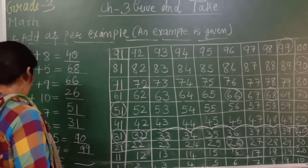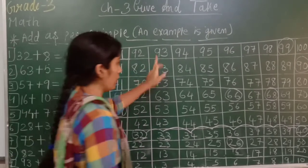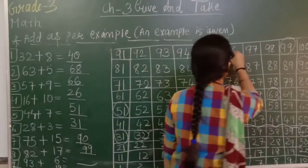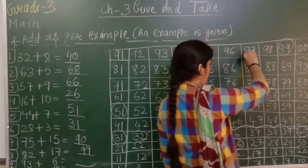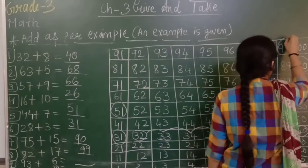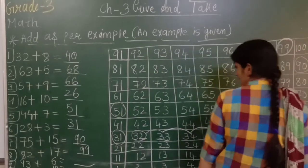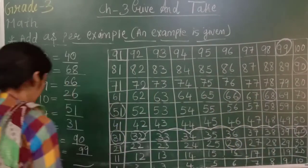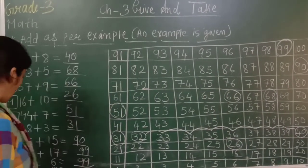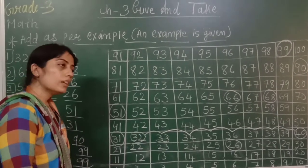Next: 93 plus 6. Where is 93? Counting 1, 2, 3, 4, 5, 6. Answer is 99. That means agar hum 93 plus 6 karenge toh answer hai ninety-nine.